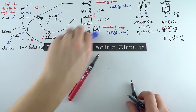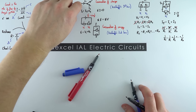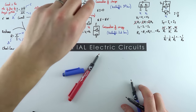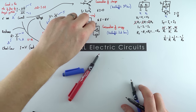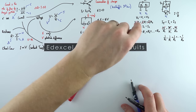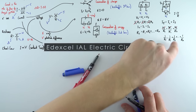To summarise the circuit rules: conservation of charge gives us I-in equals I-out; conservation of energy means EMFs equal the PDs; and we have the formulas for resistors in series and parallel.